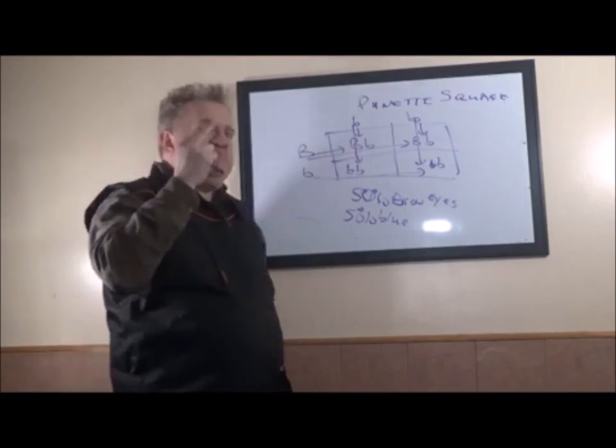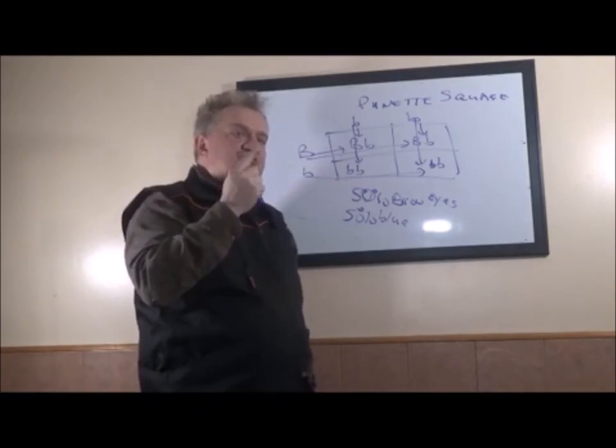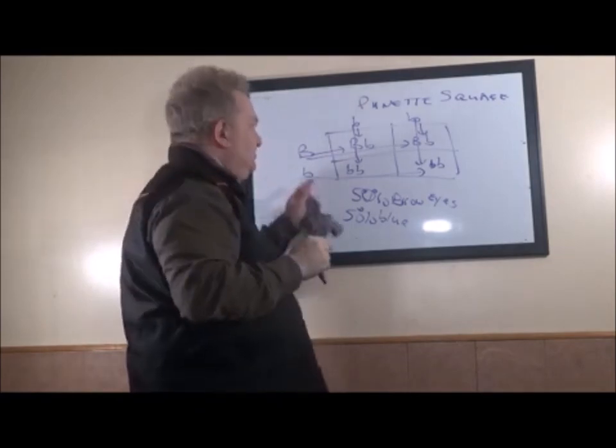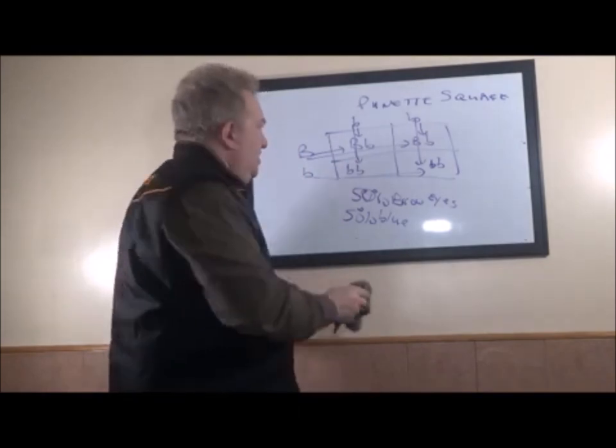You have to have both copies of the recessive to make it come true, but only one copy of the dominant to make it come true. And dominant is written with a capital letter, and recessive is written with a lowercase letter.